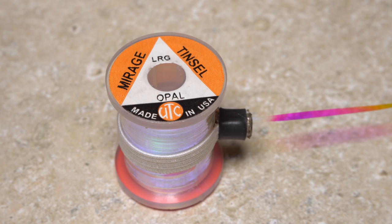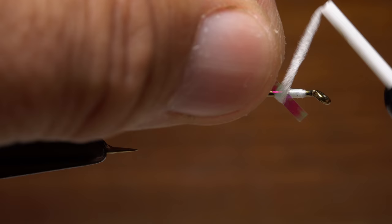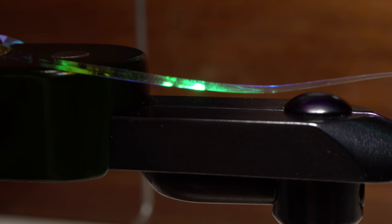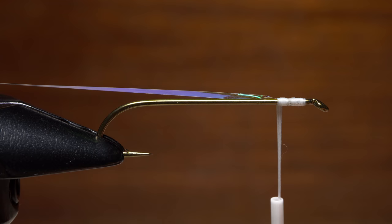Large opal-colored mirage tinsel is used to create the overbody of the fly. A 12-inch length is enough to make a couple of shiners. Lay one end of the tinsel against the near side of the hook and take wraps with the unistretch to secure it. Use a materials clip or here a magnet to hold the tinsel back and out of the way on your tying vise.